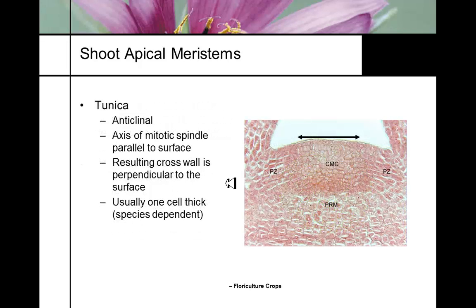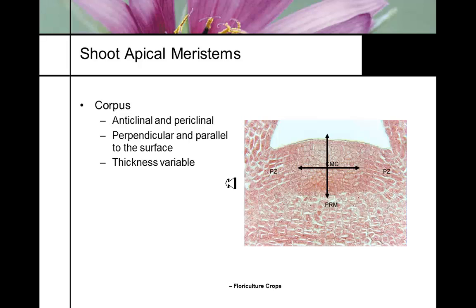Tunica cell wall differentiation is anticlinal — along the axis of the mitotic spindle, parallel surface, growing in that direction, and typically one cell layer thick. The corpus is anticlinal and periclinal — it's a dense zone of constant cell growth that we call permanently embryonic.